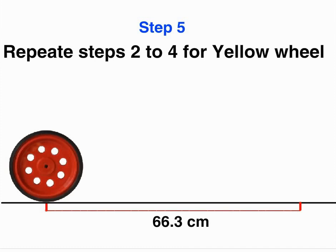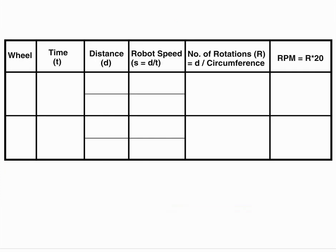Now we have recorded our readings. Let's go to the recording chart and put the readings in our chart. For our red wheel, we got distances of 66.3 centimeters in our first turn and 65.7 centimeters in our second turn. This shows the requirement for taking multiple readings so when we take average we will be able to reduce the errors.